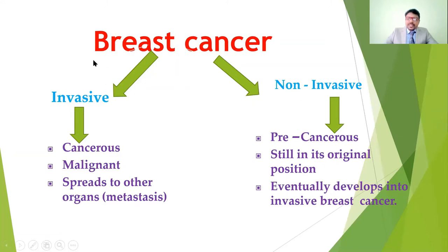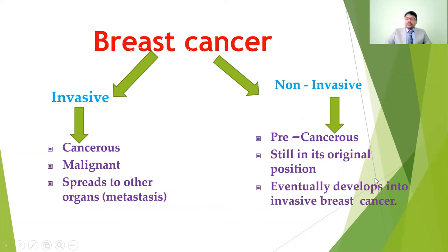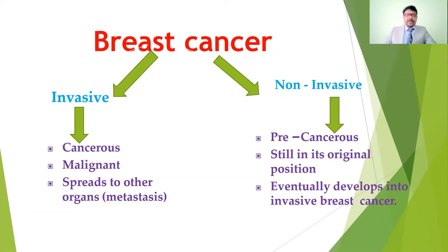Breast cancers are also classified as invasive and non-invasive. Invasive means cancerous — it spreads from one place to another through metastasis. Non-invasive is pre-cancerous; the cancer stays in its original position and does not spread to other parts of the body. However, if neglected, non-invasive cancer can progress into invasive cancerous tissue.